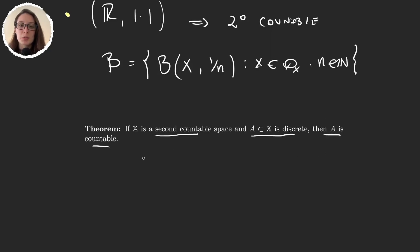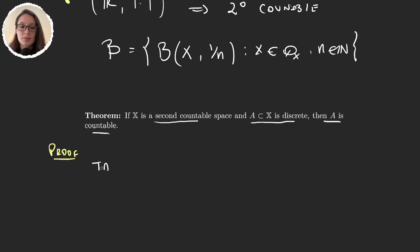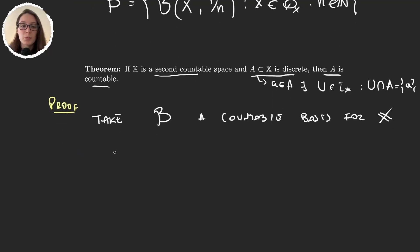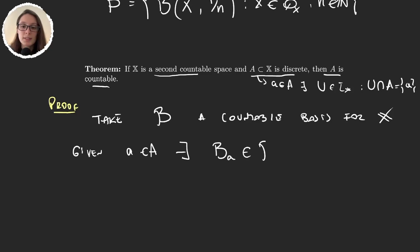If we have a second countable space and a discrete subset of the space, then we can be certain that that discrete subset will be countable. The proof is not very hard: if X is second countable, we take B to be a countable basis for X. If A is discrete, then for each element a in A there exists an open set U in the topology such that U ∩ A equals {a}. Because B is a basis, this same condition is satisfied for basis elements: given a in A there exists some set B_a in the basis such that B_a ∩ A = {a}.